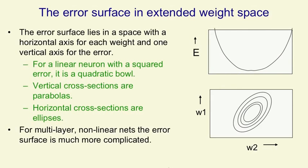We can get a nice geometrical understanding of what's happening when we learn the weights of a linear neuron by considering a space that's very like the weight space that we use to understand perceptrons, but it has one extra dimension. So we imagine a space in which all the horizontal dimensions correspond to the weights and there's one vertical dimension that corresponds to the error.